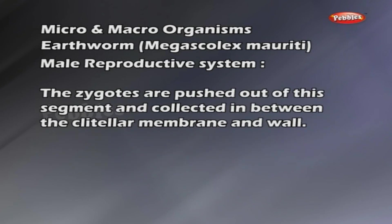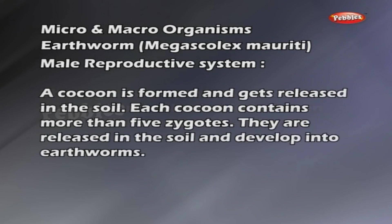The fertilization is internal, occurring in the 14th or 15th segment. The zygotes are pushed out of this segment and collected between the clitellar membrane and wall. A cocoon is formed and released in the soil. Each cocoon contains more than 5 zygotes, which are released in the soil and develop into earthworms.